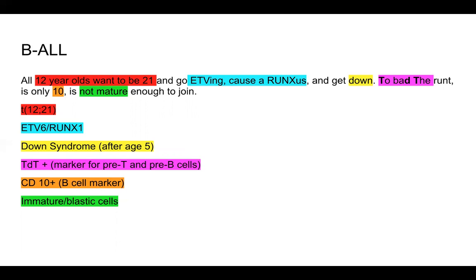'Down' represents the Down syndrome association of B-ALL. 'Too bad' represents the marker TDT, which is present on pre-T cells and pre-B cells. 'Only 10' represents the B-cell marker CD10. This helps you differentiate B-ALL from T-ALL, because CD10 is B-cell-specific — in T-ALL, the T cells will not have this CD10 marker. 'Not mature' represents immature or blastic cells, telling us that we're dealing with a blastic disease.